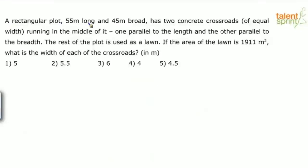A rectangular plot with length 55 meters and width 45 meters has two concrete crossroads of equal width running in the middle of it, one parallel to the length and the other parallel to the breadth. If you try and visualize the figure, there is a rectangular plot, the length of which is 55 and the breadth is 45.